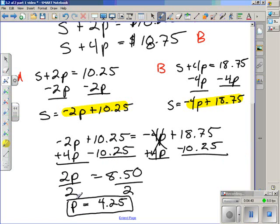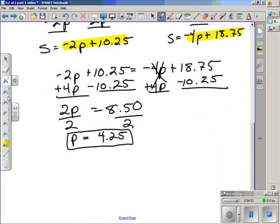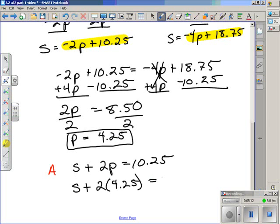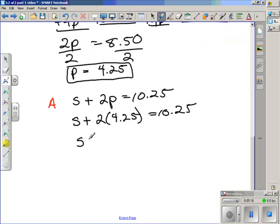We'll need to take this P, put it into one of the original equations, and solve for S. The equation S plus 2P equals $10.25 should be easy enough to work with, Equation A. So we'll take equation A, which was S plus 2P equals $10.25. Replacing the P with $4.25, giving us S plus 2 times $4.25 equals $10.25. Multiplying 2 times $4.25 gives us the equation S plus $8.50 equals $10.25, and we subtract $8.50 from both sides.